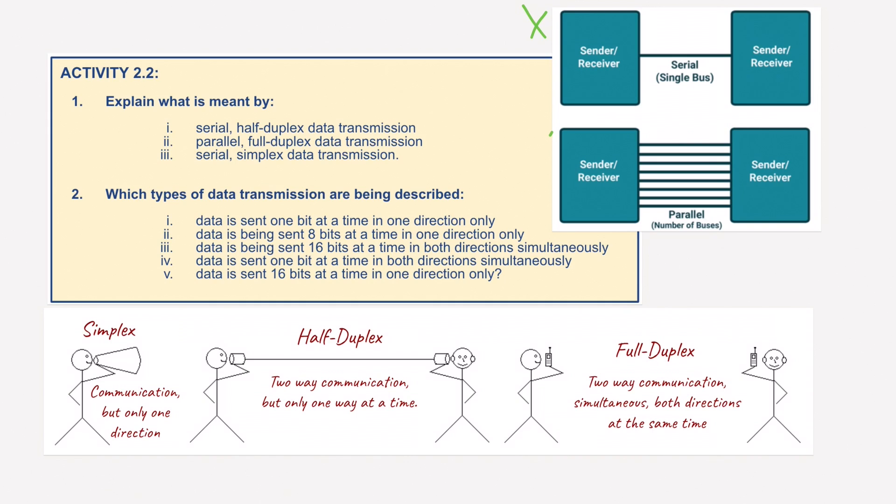Now, the other type of transmission is what's known as parallel. Parallel can send several bits of data down several wires, multiple wires as you can see here, in parallel at the same time. One wire per bit is used. This is great for short distances, especially inside computers. If it was used over long distances, the data might become skewed, and that's something we've talked about previously, where all the data doesn't arrive at the same time to the receiver.